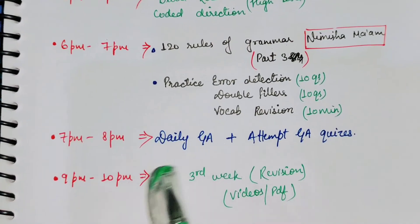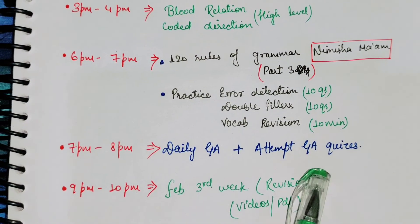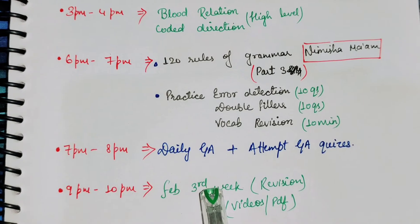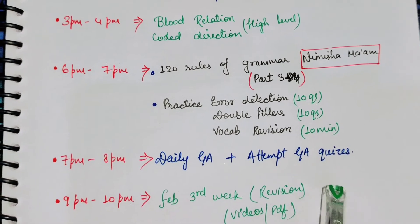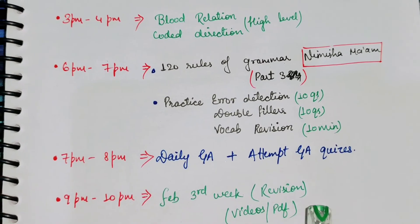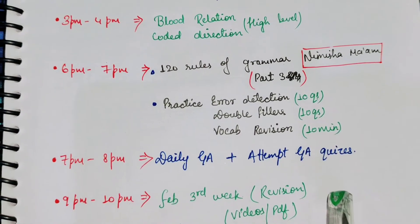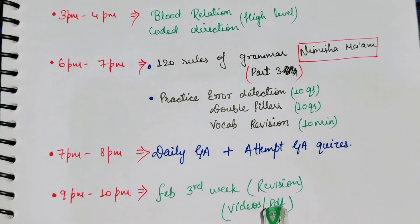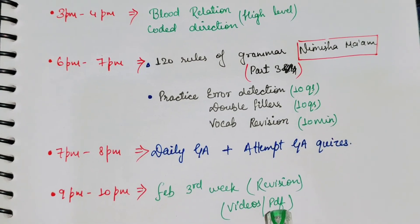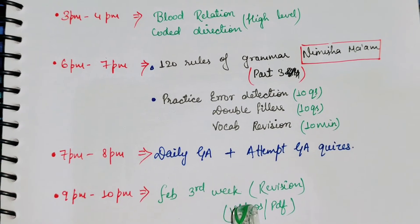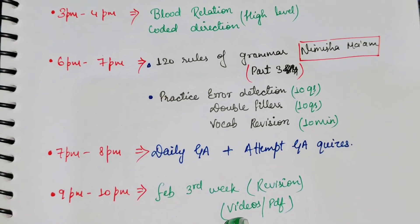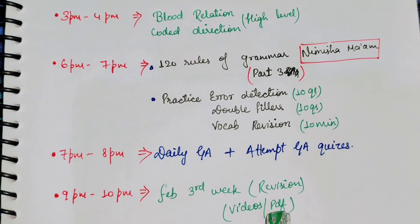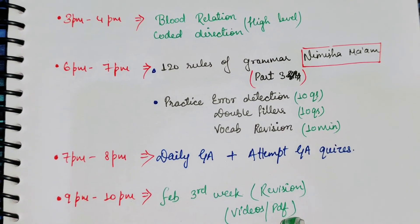From 9 PM to 10 PM, you have to do third week revision. I told you yesterday that the third week material needs to be studied well, so today you have to revise it. You can use videos or PDFs. I was suggesting FS Cloud plus Study IQ PDFs, but since someone commented that FS Cloud is expensive, you can watch FS Cloud weekly videos free on YouTube, and use Study IQ PDF videos — that will be enough.